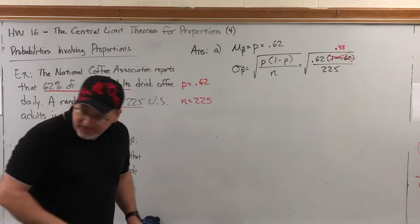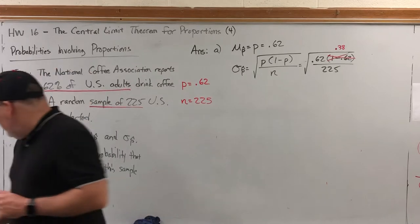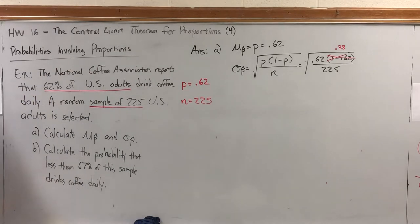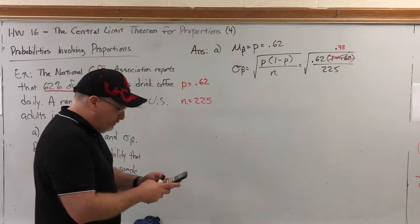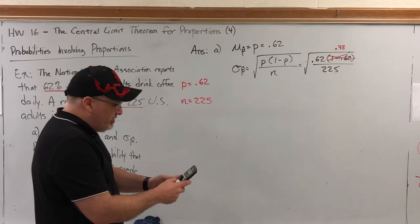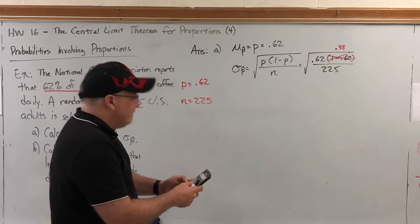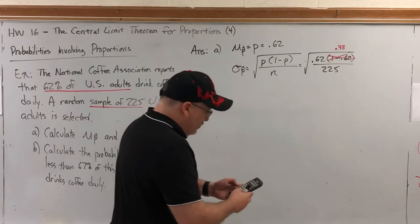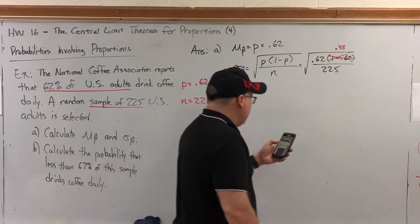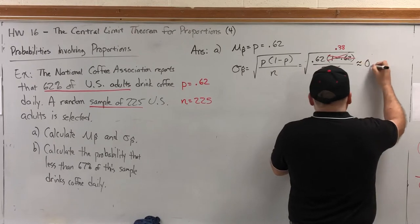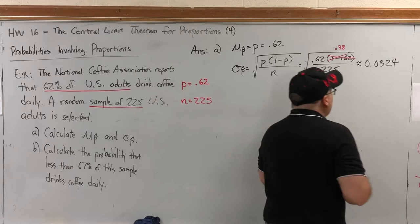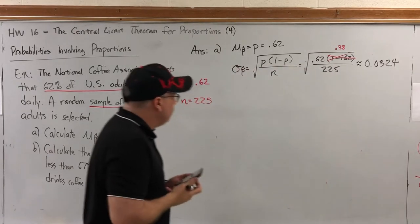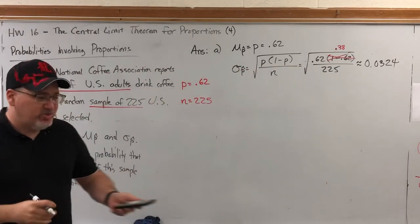So let's put this in a calculator. In the homework, we'll ask you to round to four decimal places as necessary. 0.62 times 0.38 divided by 225 equals, and now let's square root that to four decimal places, 0.0324. So that part's pretty easy, it's just formulas.